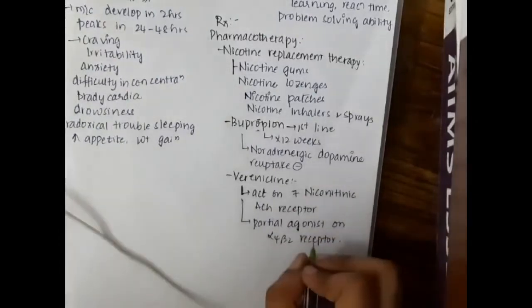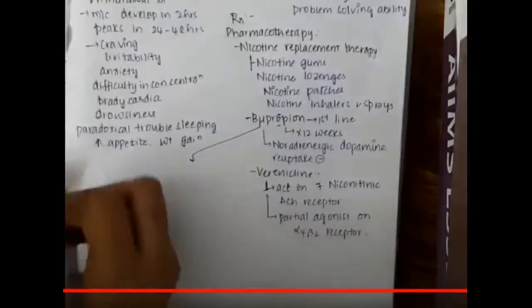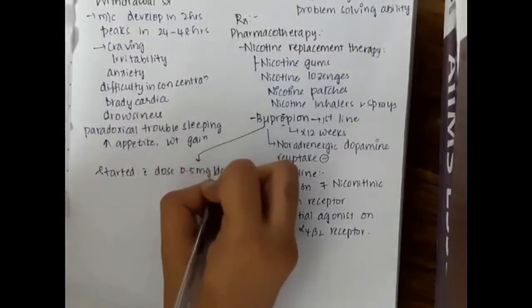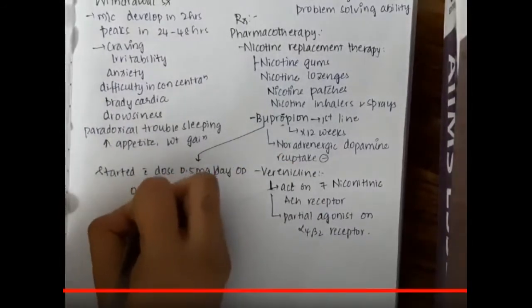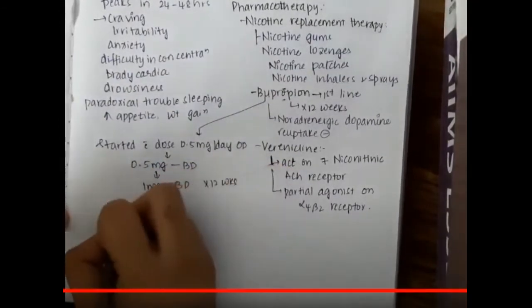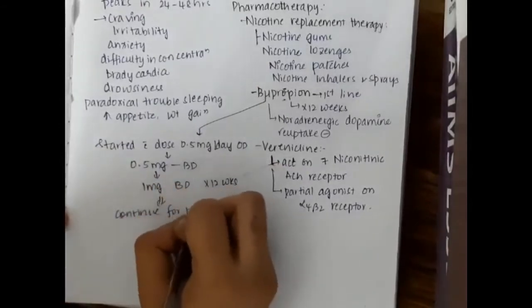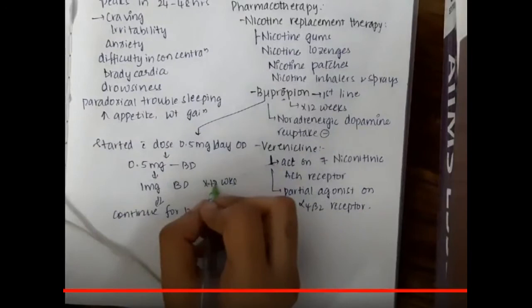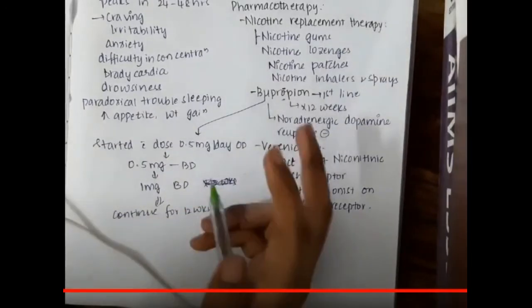Bupropion is started with a dose of 0.5 milligrams per day OD, followed by 0.5 milligrams BD, followed by 1 milligram BD, and you will have to continue this for 12 weeks. This is about the most important abused substances: tobacco and cocaine. Thank you for watching.